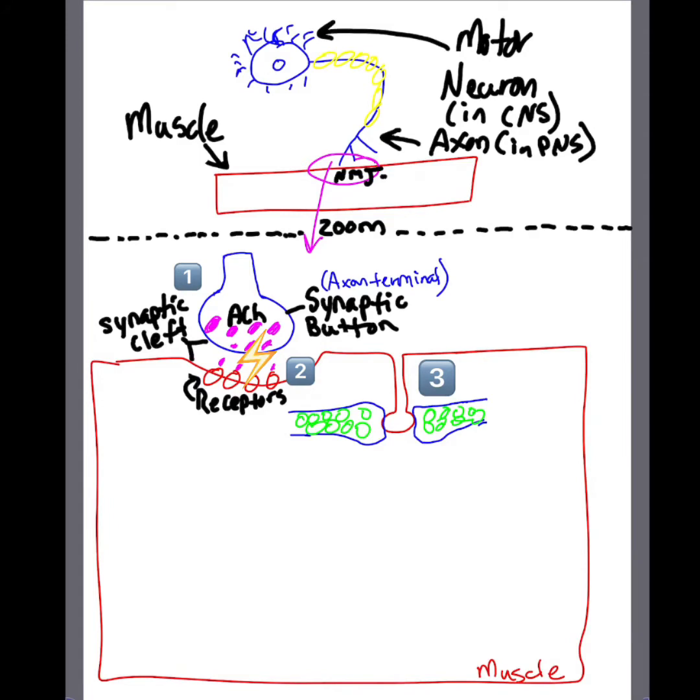So we're going to start here at the neuromuscular junction, which is basically a connection between a motor neuron and a muscle. If you listen to the word itself: neuromuscular junction - neural as in the neuron, muscular as in the muscle, junction as in this area right here in between that motor neuron and the muscle.